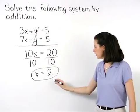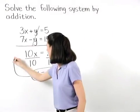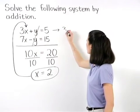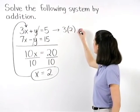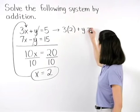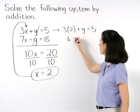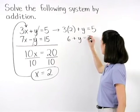If we plug a 2 back in for x, this gives us 3 times 2 plus y equals 5, which simplifies to 6 plus y equals 5.